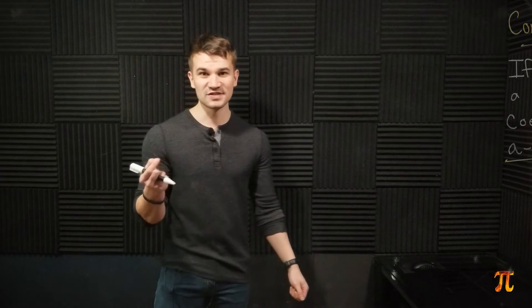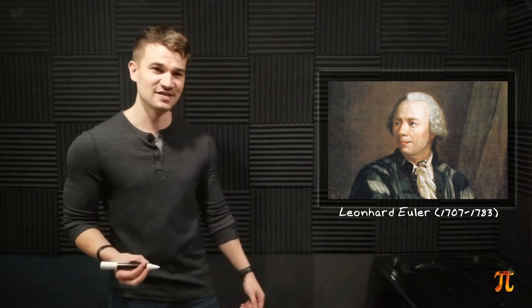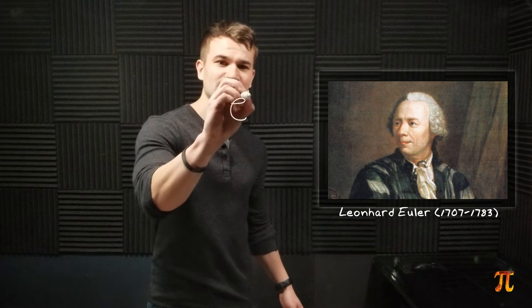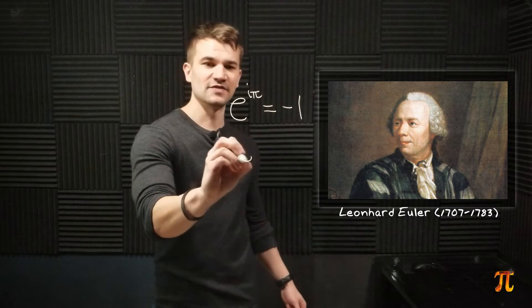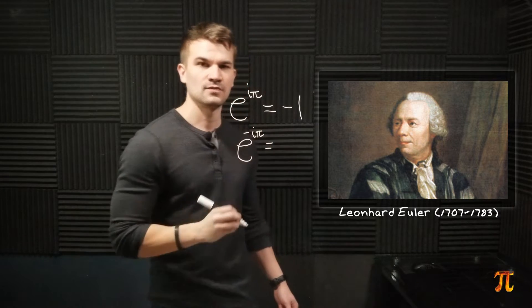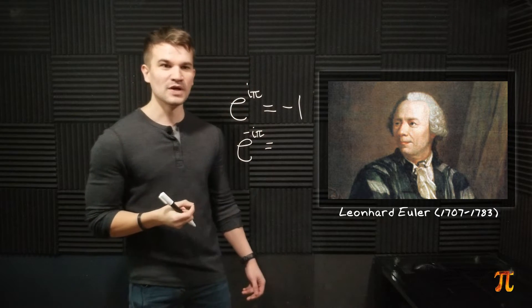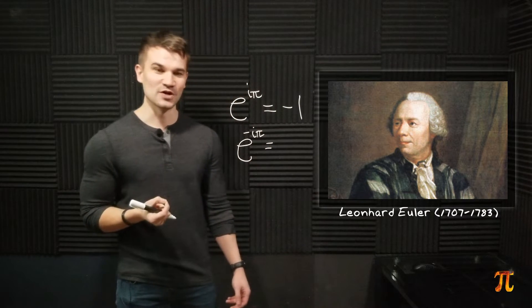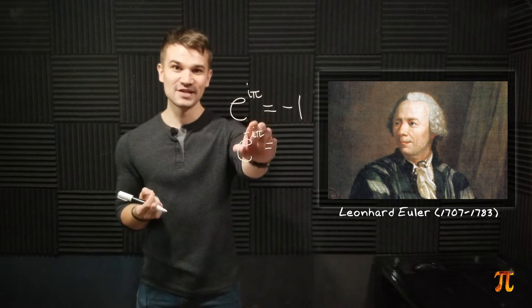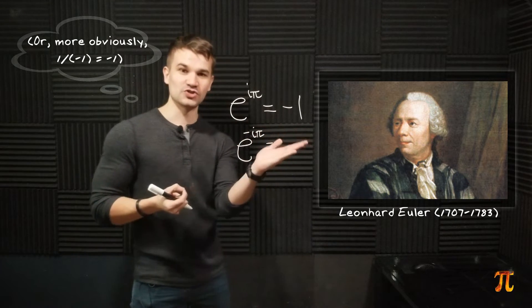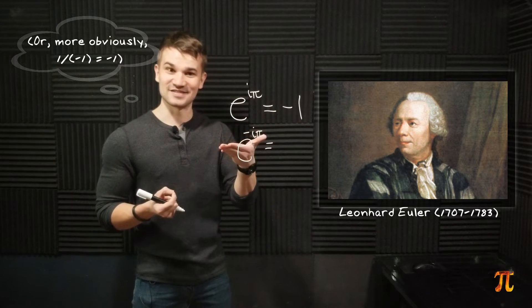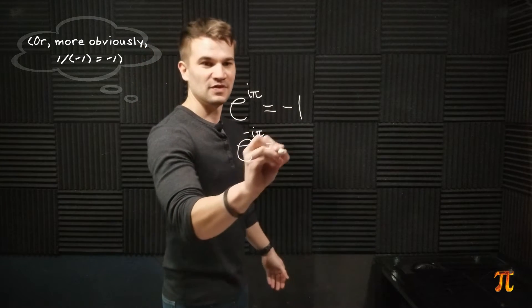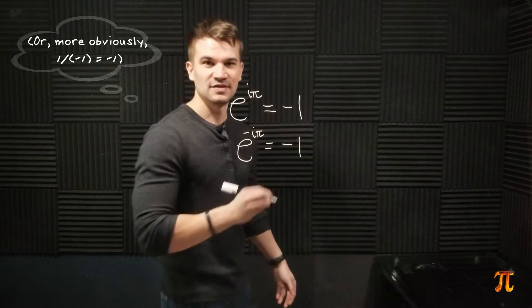The first example we should look at is Euler's identity, because everyone loves Euler's identity. e to the i pi is negative 1. So what is e to the negative i pi? Well, it's clear that this is also going to be negative 1, because if we interpret this as an angle, pi is 180 degrees and negative pi is negative 180 degrees — that's the same angle. So this remains negative 1.